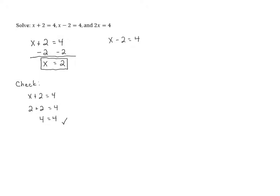Again, our goal is to get x alone on the left-hand side. In this equation, 2 is being subtracted from x. The opposite of subtracting 2 is adding 2, so we can add 2 to get rid of that negative 2. But just like the last problem, whatever we do to one side of an equation, we have to do to the other side. So we add 2 to both sides. On the left, we're left with just x because the negative 2 and positive 2 cancel. On the right, 4 plus 2 gives us 6. So our solution is x equals 6.